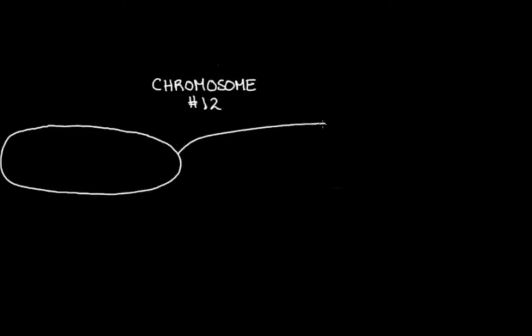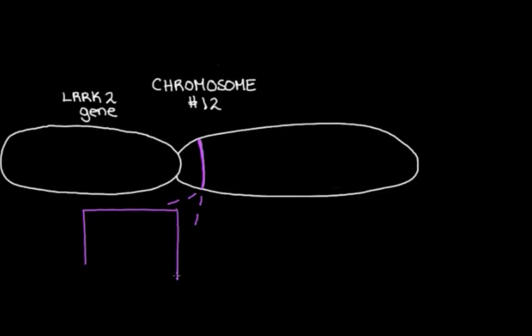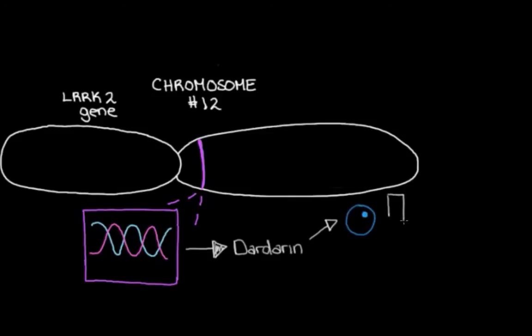So our last gene that we're going to look at is over here on chromosome 12. And the gene that we're interested in is the LRRK2 gene. So I'm going to call it LARC2. It's just a little easier to say. And it sits about here. So LARC2 gives us the recipe to make the protein Dardarin.